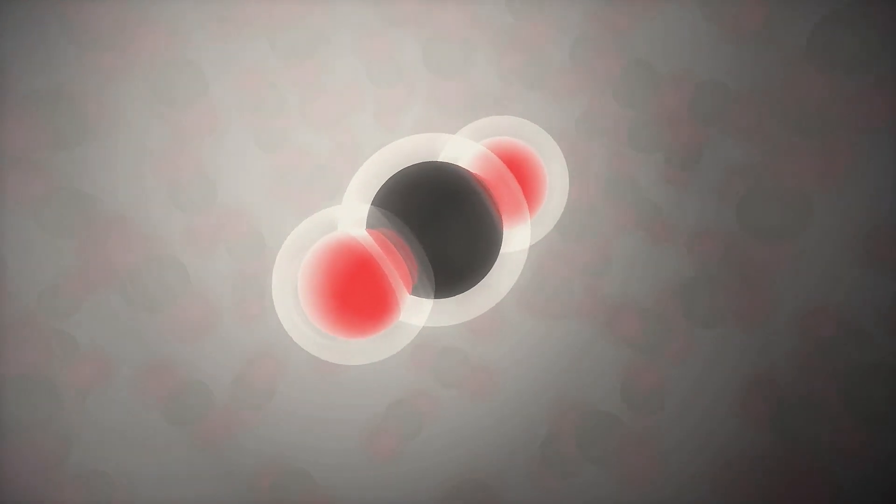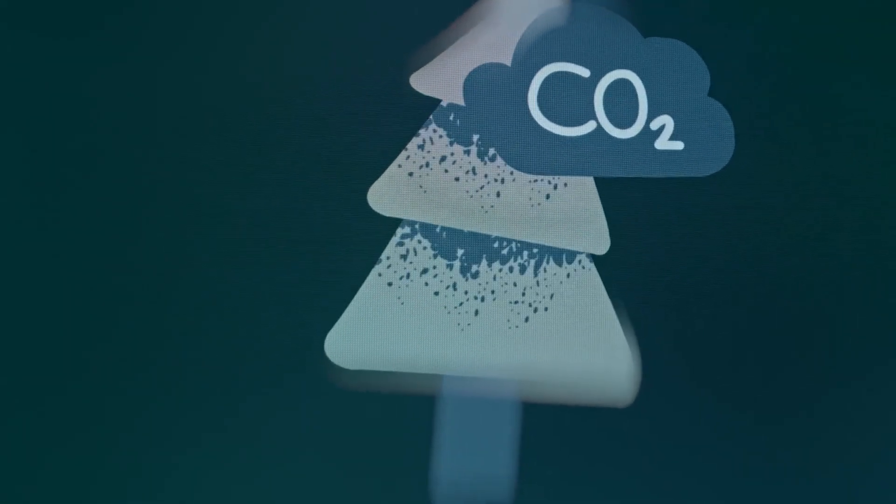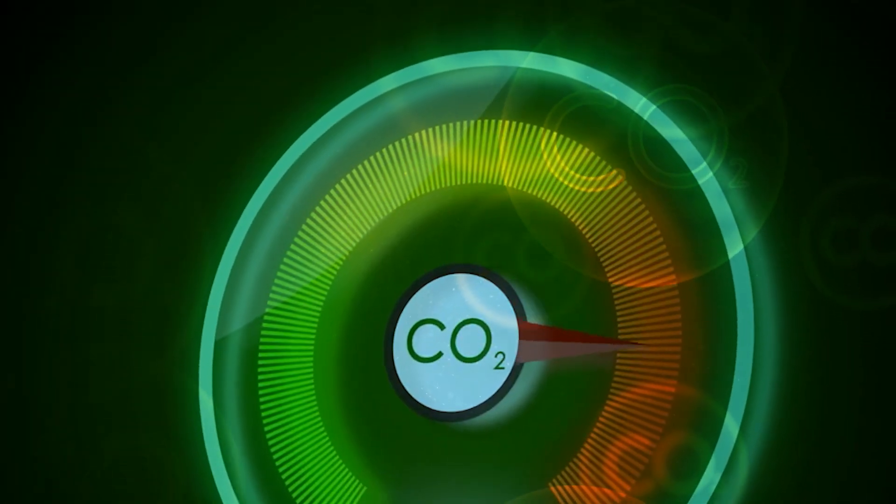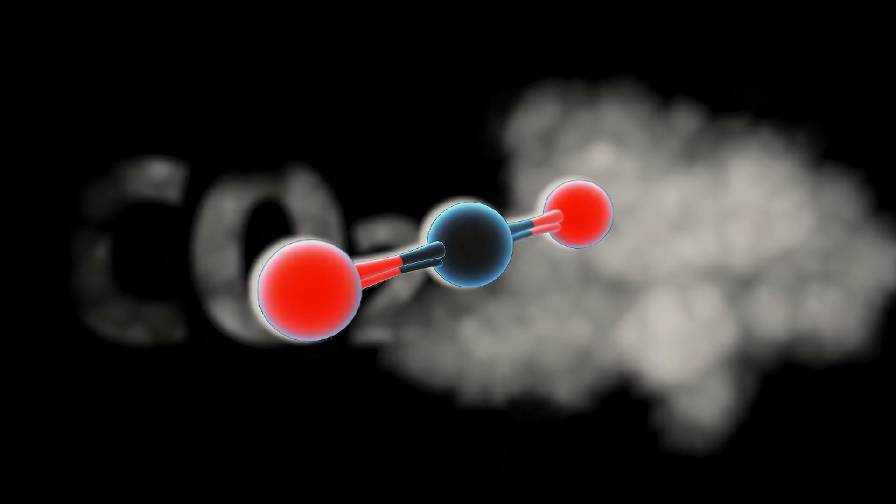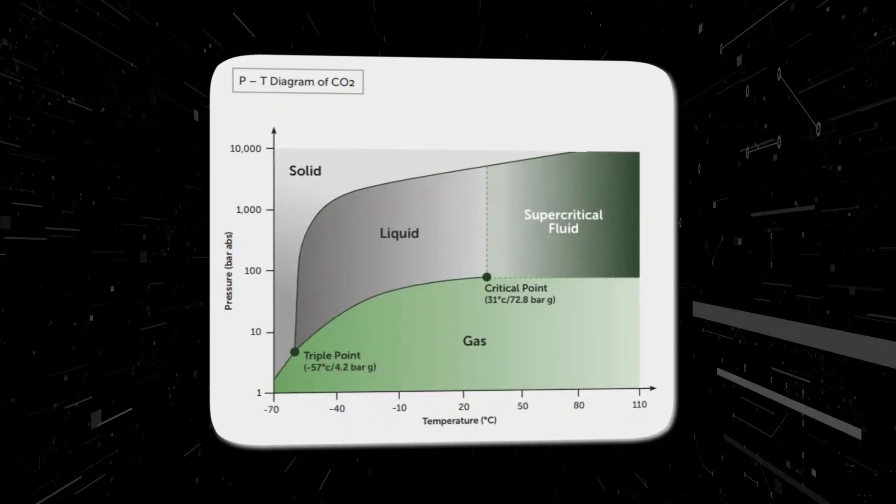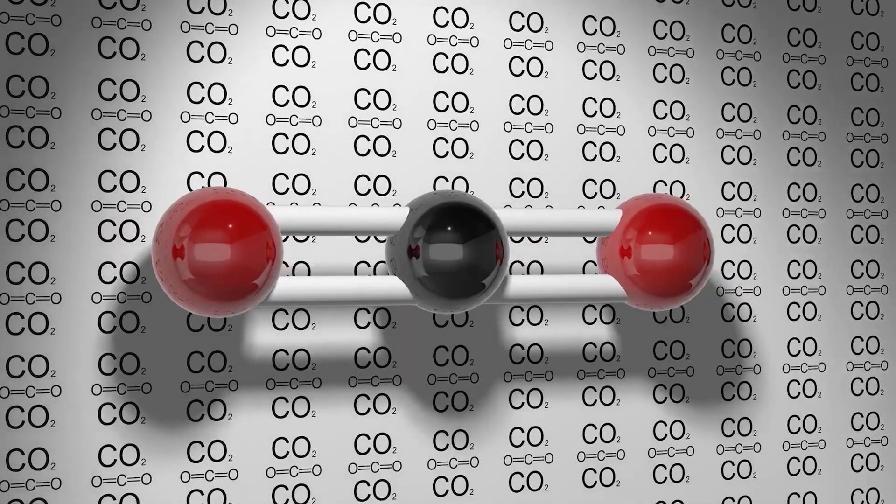It becomes useful in ways steam never could. Supercritical CO2 travels faster, carries more heat, and compresses with minimal effort. It wastes no energy changing form. It simply circulates, expands, contracts, again and again. And because it never has to cross that costly vapor-liquid boundary, it achieves efficiencies once thought purely theoretical.